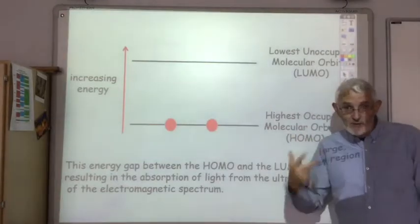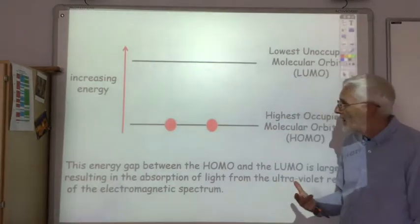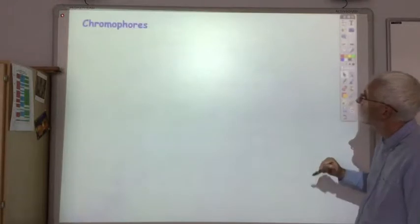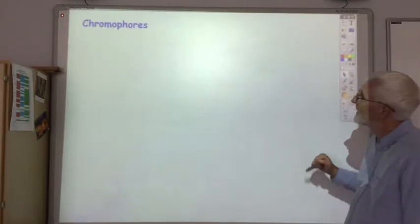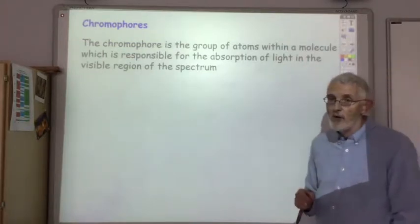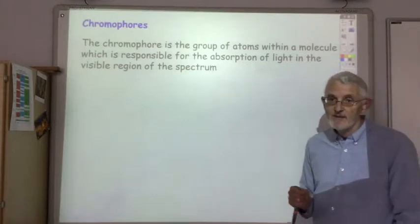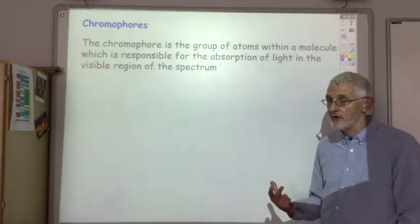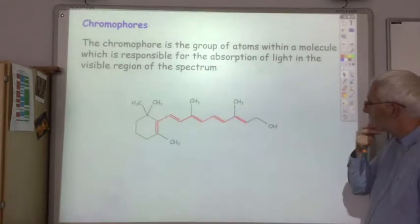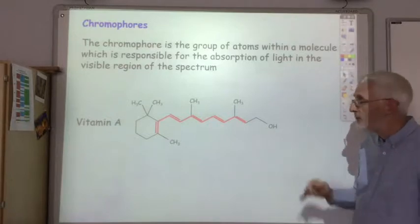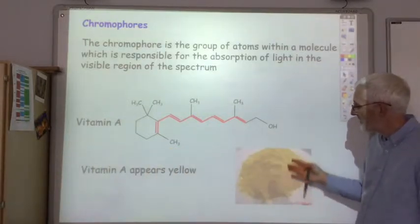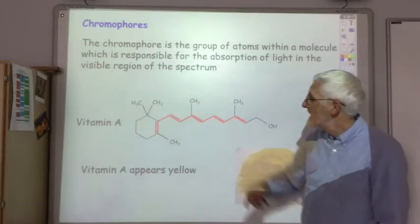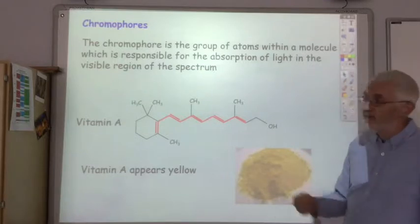That is the reason why the vast majority of organic molecules have no colour. However there are some exceptions — some organic molecules which are coloured. We're going to talk about chromophores. A chromophore is the group of atoms within a molecule which is responsible for the absorption of light in the visible region of the spectrum. So if you've got a coloured organic compound it must contain a chromophore. Vitamin A, for example, is yellow. The portion of the molecule highlighted in red is the chromophore — the part responsible for the absorption of light.